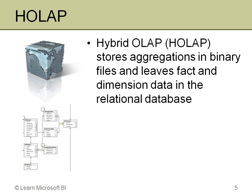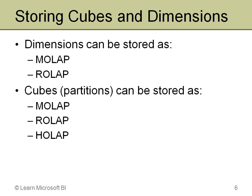The third option is HOLAP, or hybrid OLAP. It leaves the dimension and fact data in the relational database, in the fact and dimension tables, but creates the aggregations in the new MOLAP binary structure. The whole point of the MOLAP structure is that it is physically laid out on disk so it can be accessed and loaded into memory as quickly as possible. Compared to what you get with MOLAP, a SQL query against a SQL Server warehouse can seem slow.